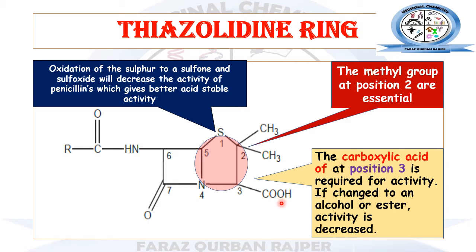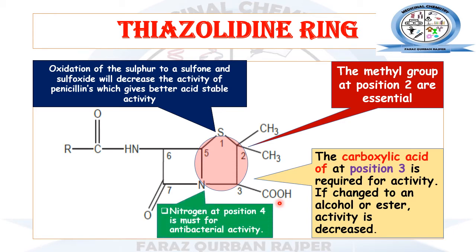At the third position, the carboxylic acid functional group is present, which is also essential for antibacterial activity. If we modify this carboxylic acid to convert it into an ester or alcohol derivative, the activity will be decreased. This carboxylic acid at position three can be utilized in the formation of different prodrug products, but those products will ultimately have less antibacterial activity compared to the parent penicillin drug.